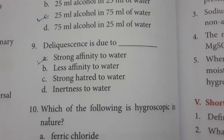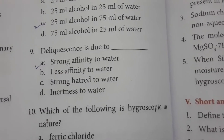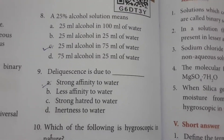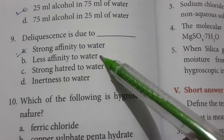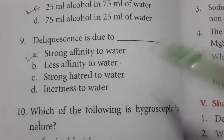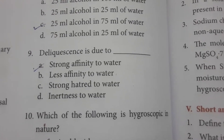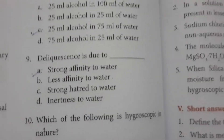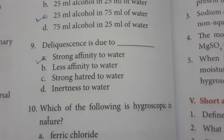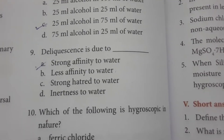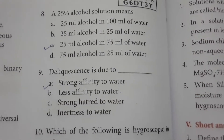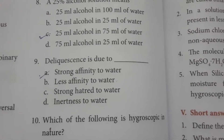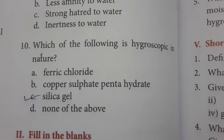Deliquescence means if you keep some salts open in atmospheric air, those salts absorb water molecules from the air and dissolve. That type of salt is known as deliquescent. Deliquescence is due to the chemical substance having a strong affinity to water — they essentially have a strong attraction to water molecules.